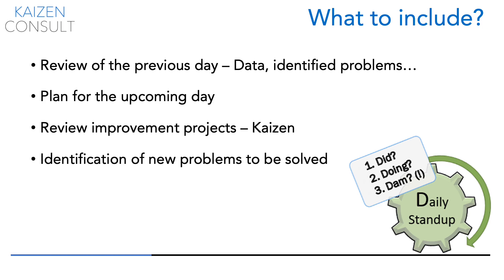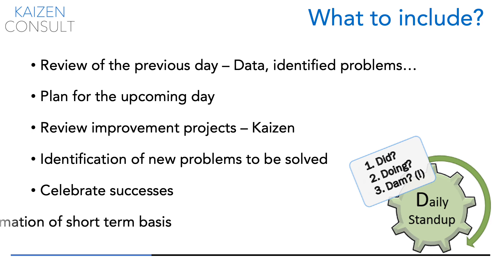You may identify new problems to be discussed and solved. You may want to test a quick and obvious solution through a Kaizen team, or take note of it and add it to your Kanban board of problems for later resolution. You can also celebrate successes of the previous day — perhaps a Kaizen improvement which brought massive positive change to the company. Finally, cover any other information of a short-term basis.